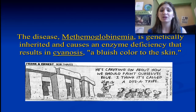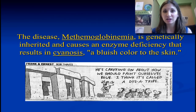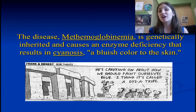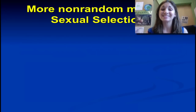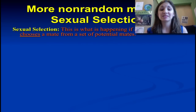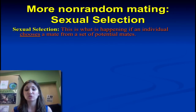Lots of organisms inbreed in nature. Plants can cross-pollinate and sometimes self-pollinate, although in order to maintain genetic diversity there are lots of mechanisms to prevent that. But closely related individuals mating is not a rare occurrence in nature. The other type of non-random mating is sexual selection, where we have differential reproductive success either based on male competition or female choice — when an individual chooses a mate from a set of potential mates and not everyone gets to reproduce.